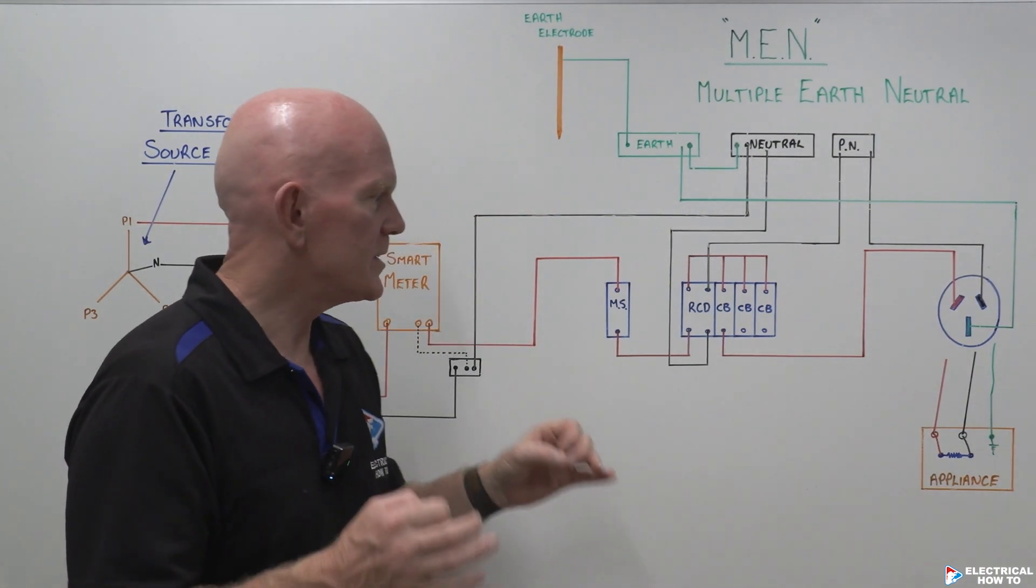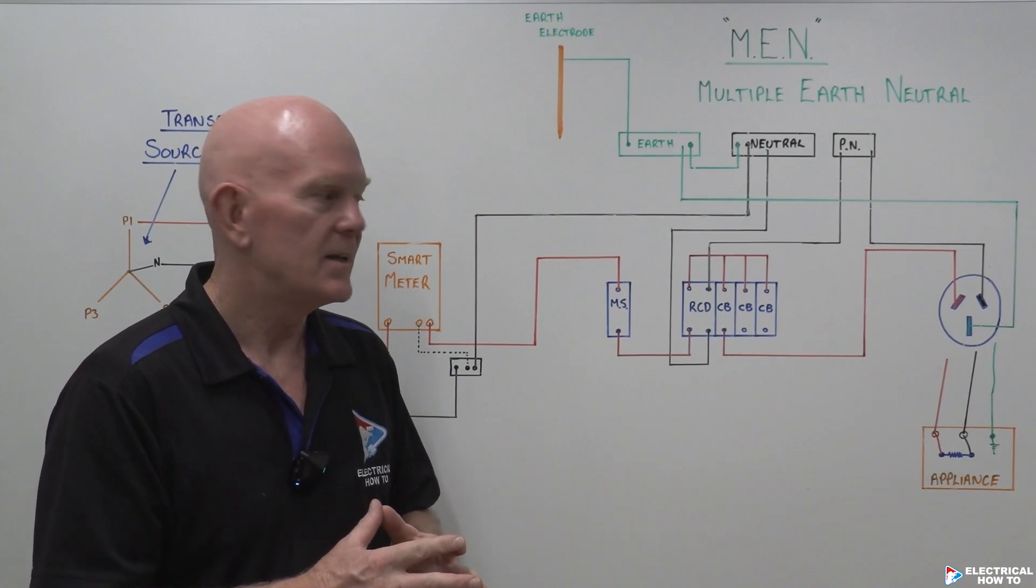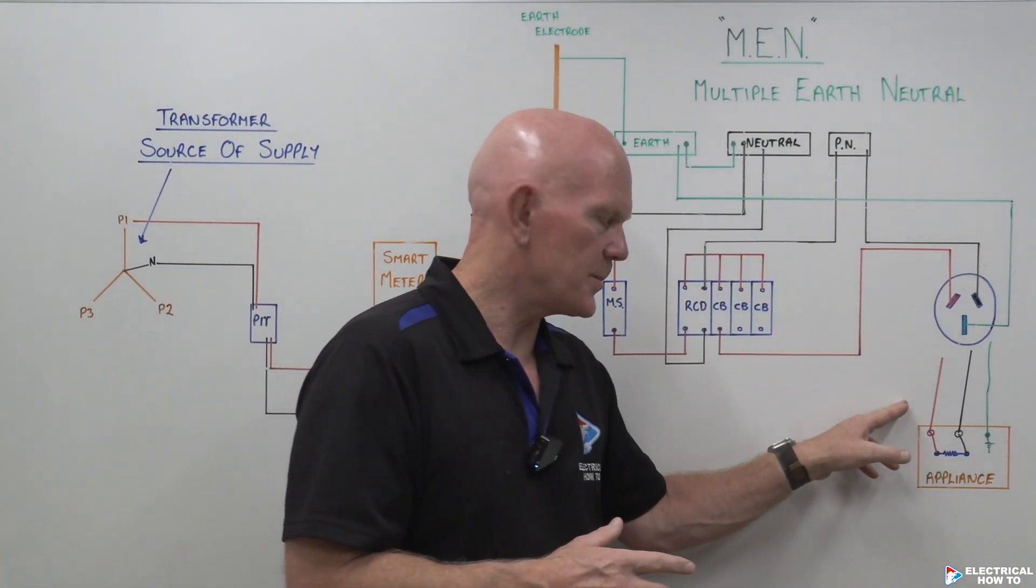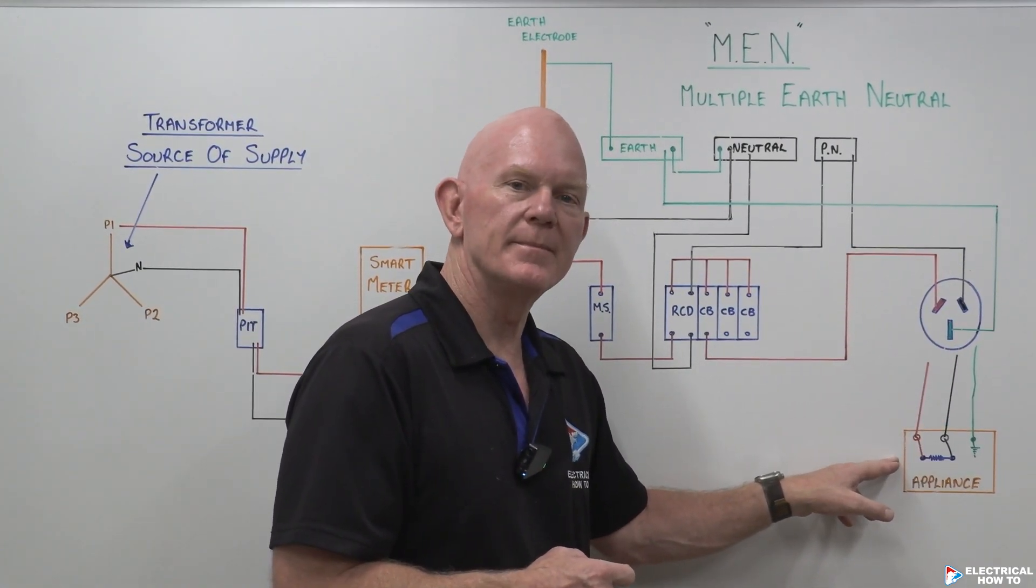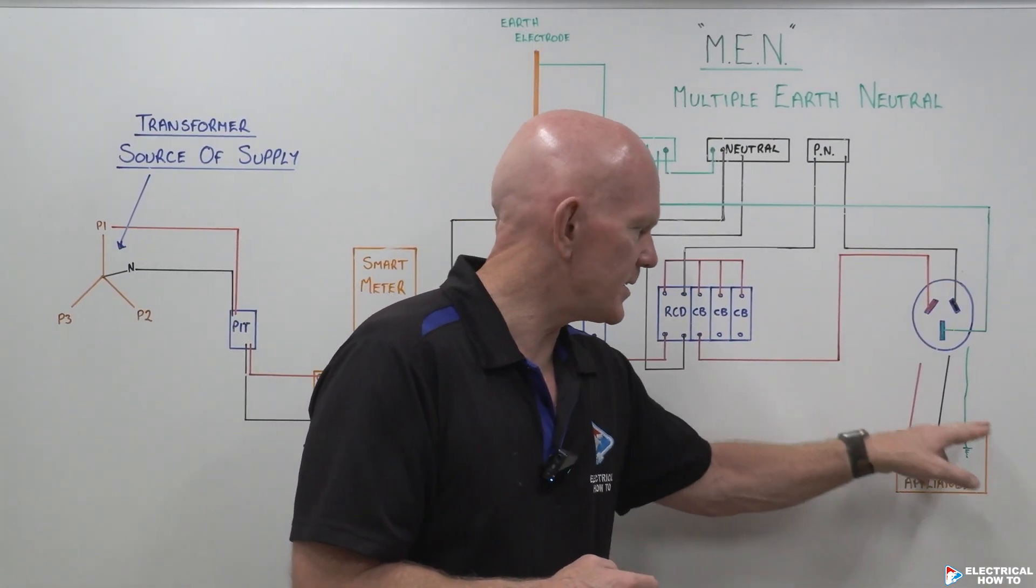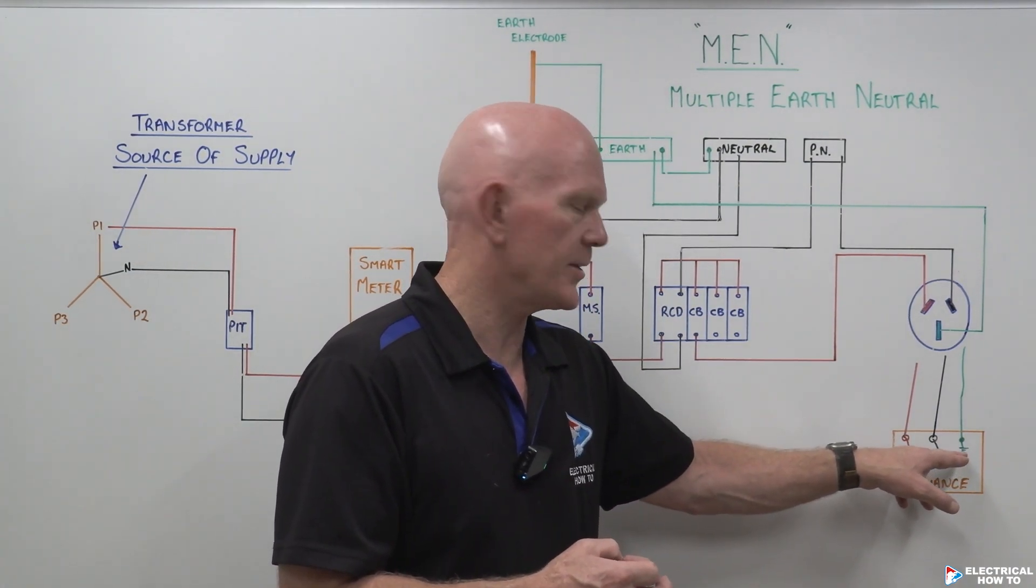But what's going to happen when something goes wrong in the property? Let's take a look at this appliance and see what happens when this active conductor touches the frame. And we're lucky that this frame is earthed and it's protected by our protective earthing cable.